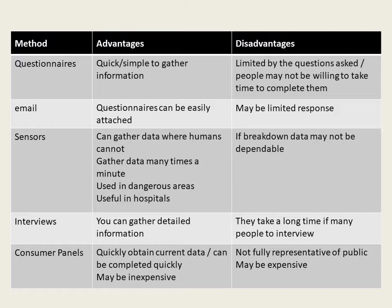Firstly, questionnaires — they are quick and simple to gather information from. However, the disadvantage is that people might not be willing to fill them in. Emails — questionnaires can be easily attached to the email, but again there might be limited response and the emails might get lost. Sensors — they can gather data where humans cannot; they can be useful in hospitals and in dangerous areas to collect data. However, if the technology breaks down, they become not very dependable.